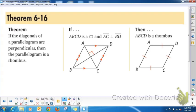Theorem 6-16: if the diagonals of a parallelogram are perpendicular, then the parallelogram is a rhombus. So this is slightly like the converse of the theorem we previously had, 6-13, where we said if a parallelogram is a rhombus, then its diagonals are perpendicular. Well if you know the diagonals are perpendicular, then you can say it's a rhombus.